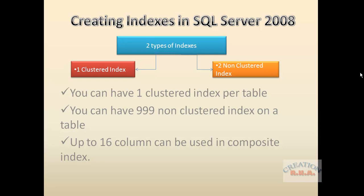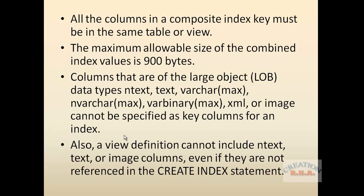You can use up to 16 columns as a composite key in an index. Whenever you specify more than one column in the index it is known as a composite key, and it can go up to 16 columns. All the columns in the composite index key must be on the same table or view.